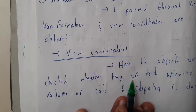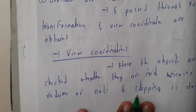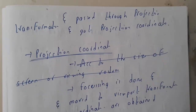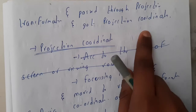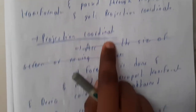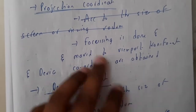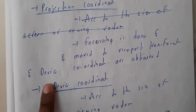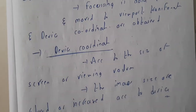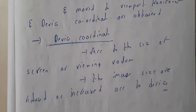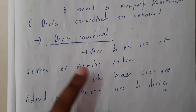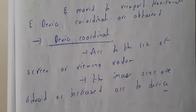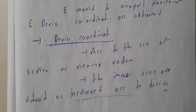View coordinates: the objects are checked whether they are inside the viewing volume or not, and clipping is done. Those not in the viewing volume are clipped off, then passed through projection transformation to get projection coordinates. Projection coordinates involve camera angles, viewports, and focusing. These are then moved to viewport transformation to obtain device coordinates — your system coordinates where you can clearly see the object, with image size adjusted according to the device.